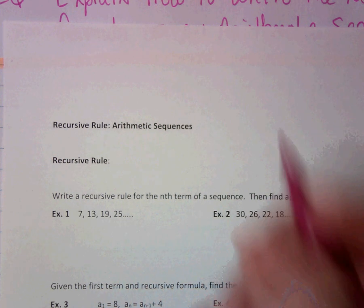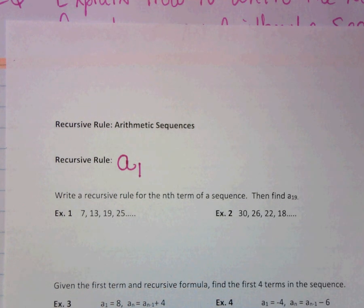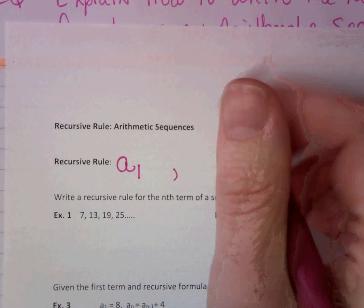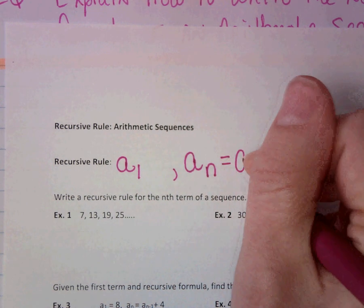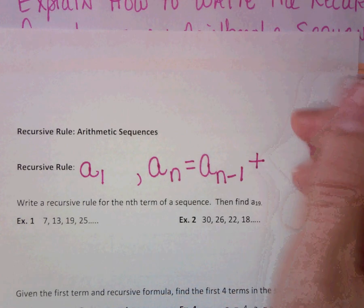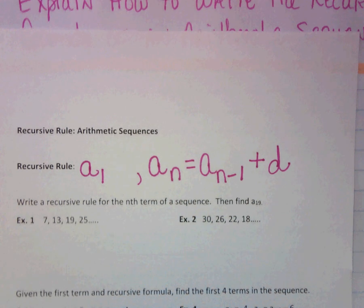With the recursive rule for arithmetic sequences, we have to be given the first term. We have to be given a sub 1 or be able to determine what a sub 1 is. Then we would state a sub 1 and then the recursive rule: a sub n equals a sub n minus 1 plus d.